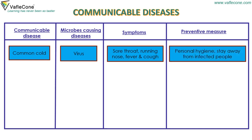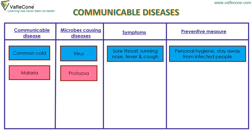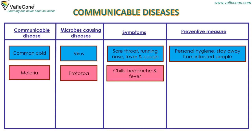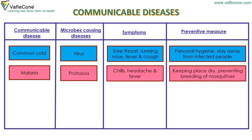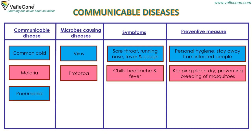Malaria: microbes causing the disease — protozoa. Symptoms: chills, headache, and fever. Preventive measure: keeping the place dry and preventing the breeding of mosquitoes. Pneumonia: microbes causing the disease — bacteria, fungi, and virus.